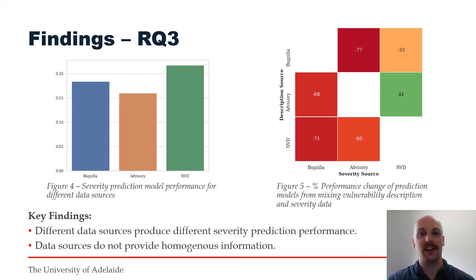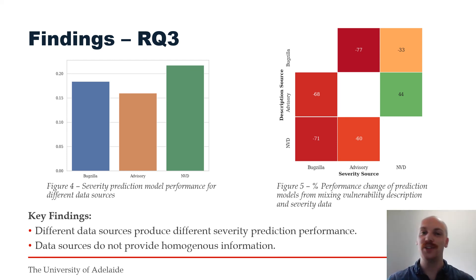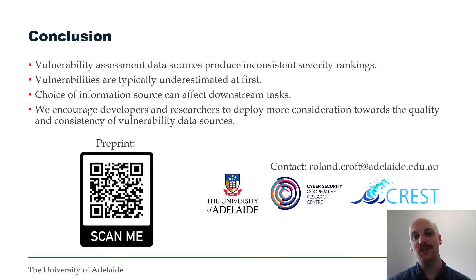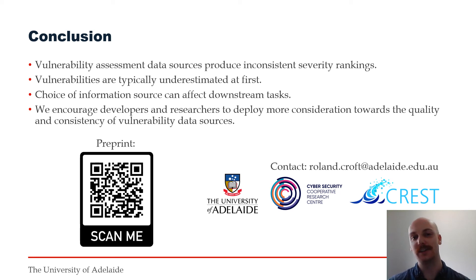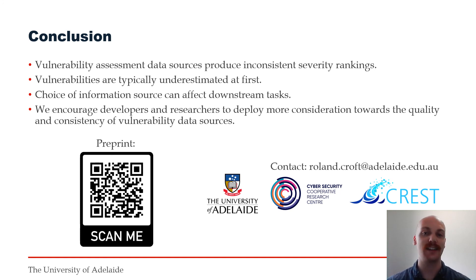Interestingly, however, models trained on the Mozilla advisory descriptions actually increased in performance when using NVD labels, which may attest to the quality of the NVD data source. To conclude, we have investigated the inconsistency of severity rankings produced by different vulnerability assessment data sources. Our study explored the characteristics, causes and impacts of this inconsistency. Primarily, we observed there to be weak correlation in the produced severity orderings of each data source.